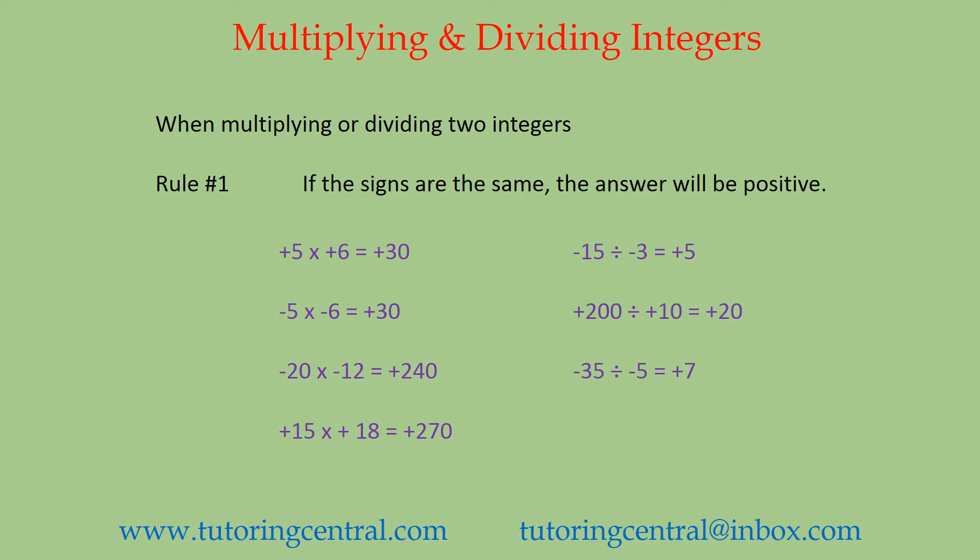Positive 5 times positive 6 equals positive 30 — that's just a straightforward multiplication question really. Negative 5 times negative 6 also equals positive 30; that's where some people get confused. Negative 20 times negative 12 is positive 240. Positive 15 times positive 18 equals positive 270.